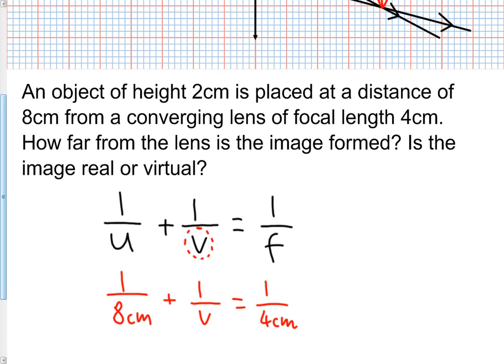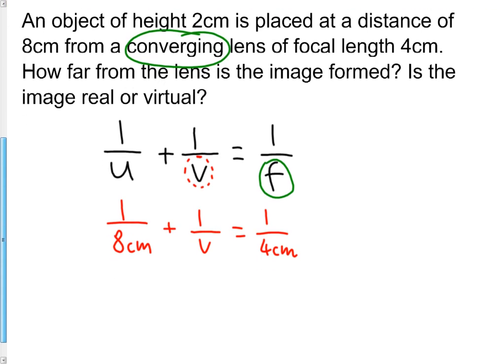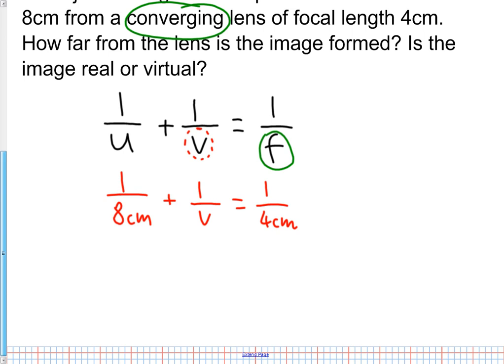f is 4cm. The convention is that for a converging lens, the focal length is positive, so that's plus 4cm. You're welcome to do this any way you like, as fractions or as decimals. I'm going to do it as fractions because it looks like an easy one. I can change 1 over 4 to 2 over 8. Now if I subtract 1 over 8 from each side, I'm going to have 1 over v is 2 over 8 minus 1 over 8, which is 1 over 8cm.